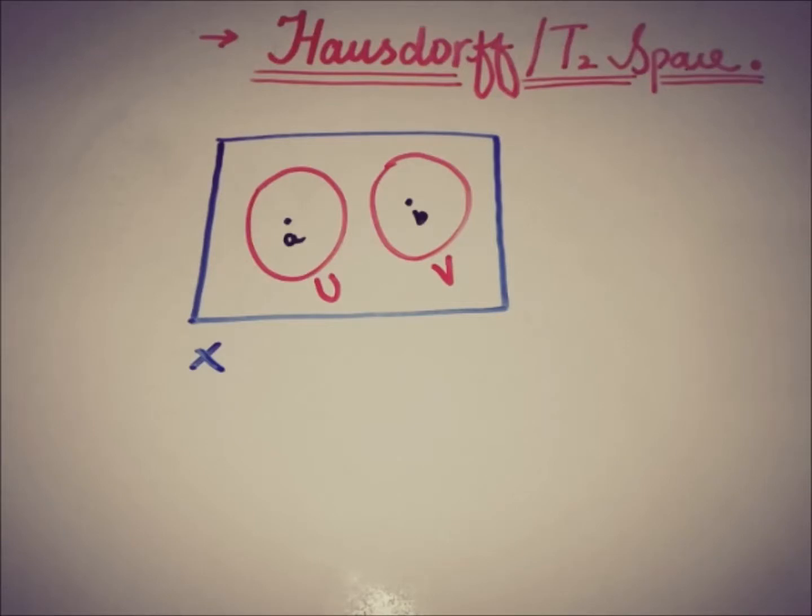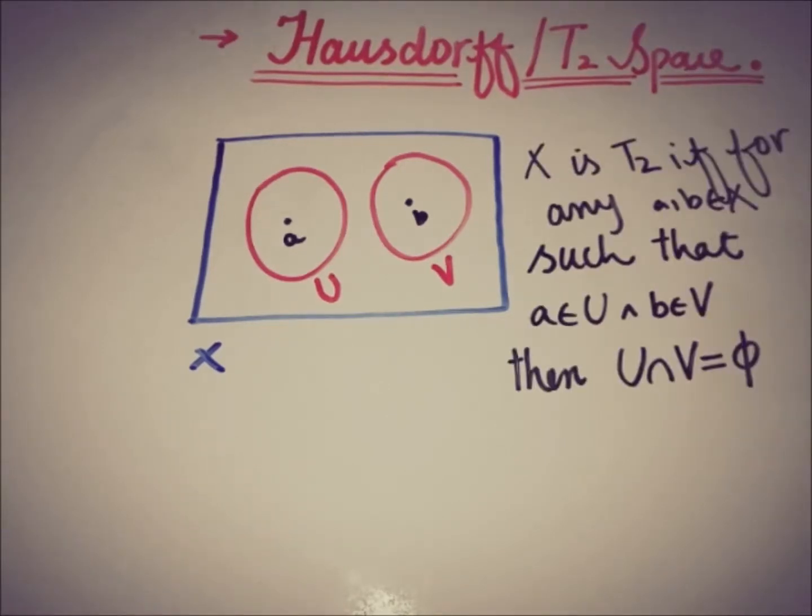More precisely, a space X is said to be Hausdorff or T2 space if for any two points in X or in a topological space, there exist open sets such that their intersection must be empty. Now we'll see some examples to understand this concept.